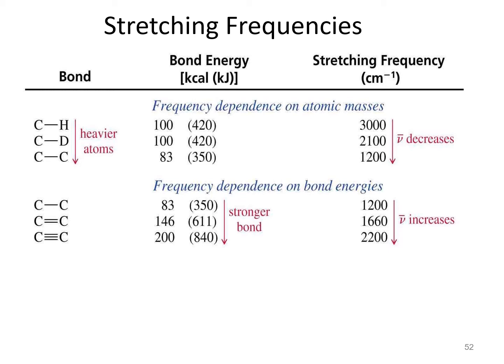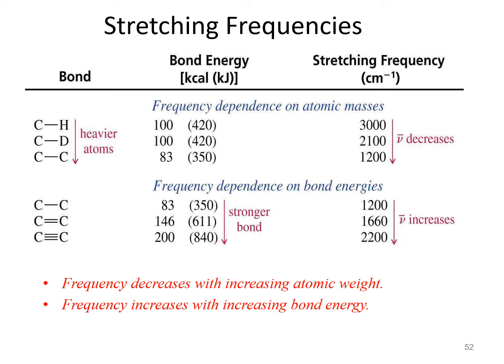Here we show the different types of criteria when evaluating IR spectroscopy. As the atom gets heavier — from hydrogen to deuterium to carbon — the frequencies of the bond energy decrease, meaning the stretching frequencies in centimeters to the minus one also decrease. There is also a dependency on bond energy: single bonds to double bonds to triple bonds increase bond strength, which increases bond energy and also increases the stretching frequency. In summary, frequency decreases with increasing atomic weight and increases with increasing bond energy.